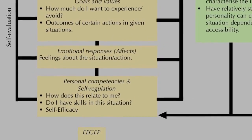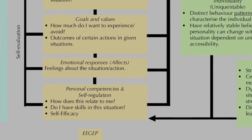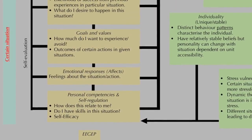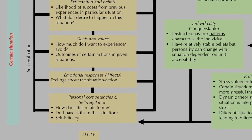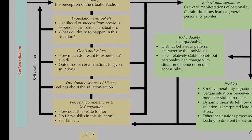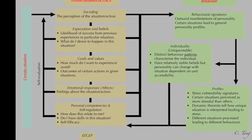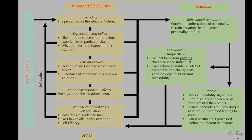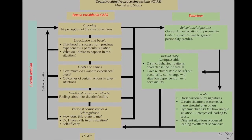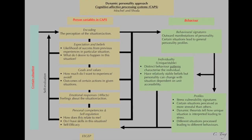A big limitation of this theory is how do you test all of the individual components of the Cognitive Affective Processing System. But an advantage is that it has some internal validity. In summary, the Cognitive Affective Processing System includes person variables such as encoding, expectations and beliefs, goals and values, emotional responses, and personal competencies and self-regulation, and how these all affect behavior in the form of behavioral signatures that account for individuality and profiles.